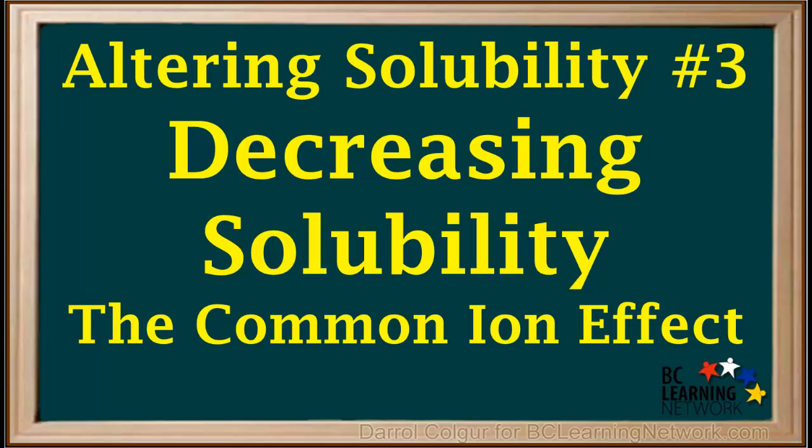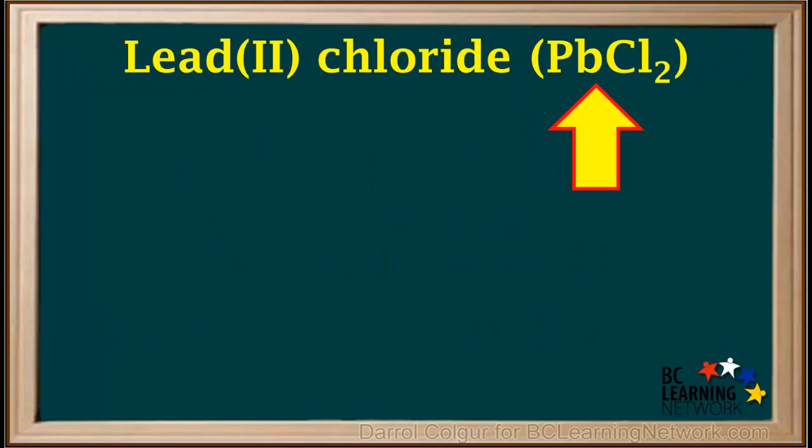Here we'll look at how we can decrease the solubility of a compound using what is called the common ion effect. As an example, we'll consider a saturated solution of lead(II) chloride, or PbCl₂.